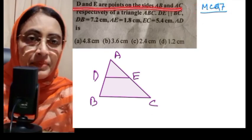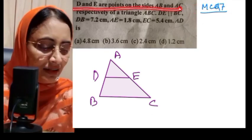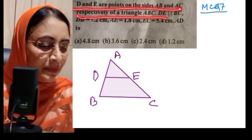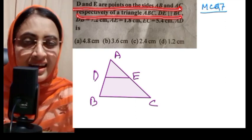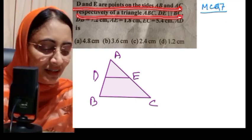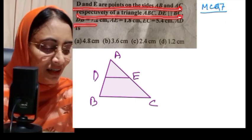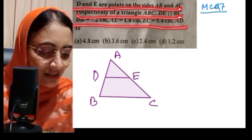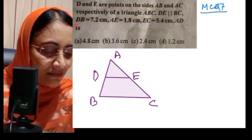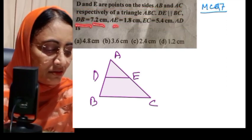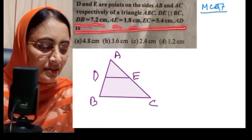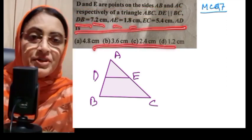MCQ number 7: D and E are points on the sides AB and AC respectively of triangle ABC, and DE is parallel to BC. Again, since lines are parallel, we apply BPT. DB and AD values are given, so AD/DB equals AE/EC.